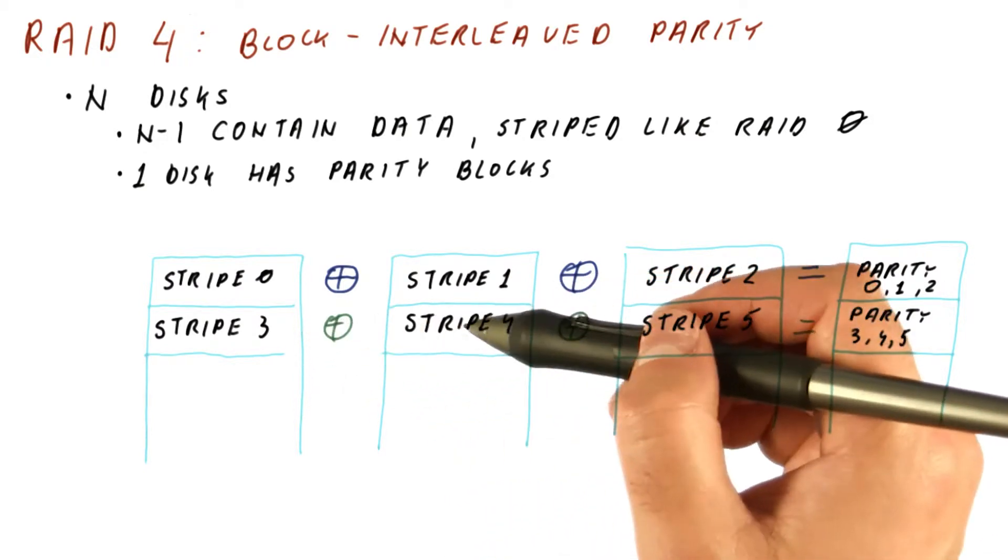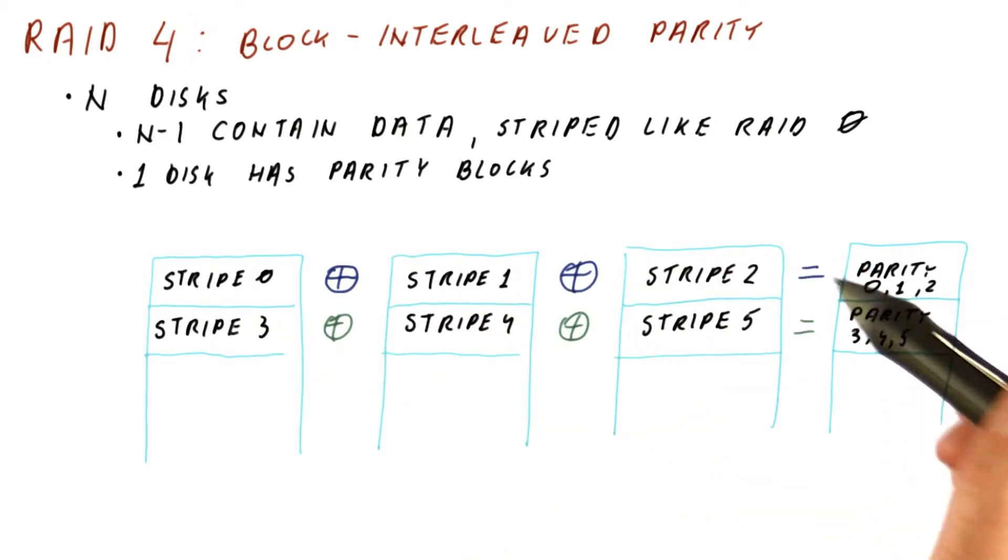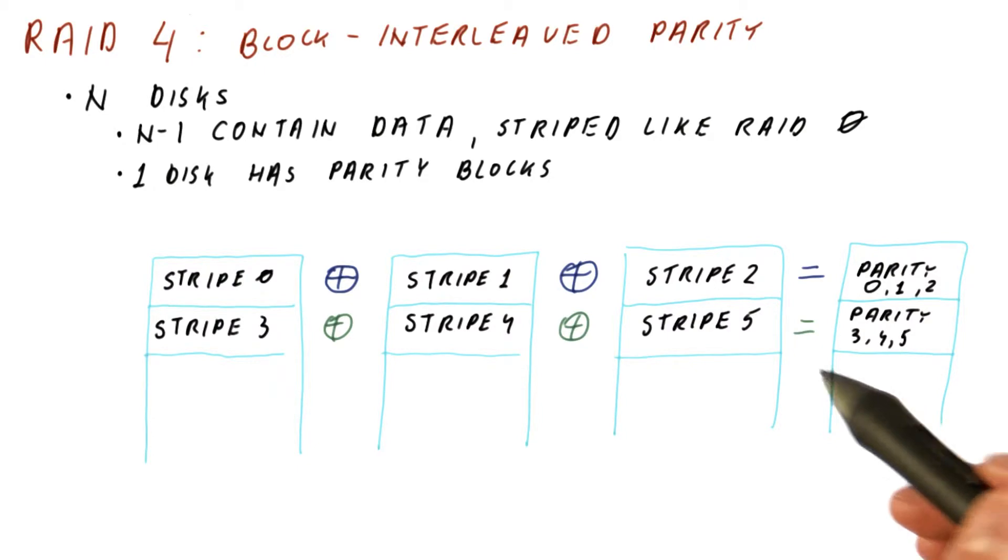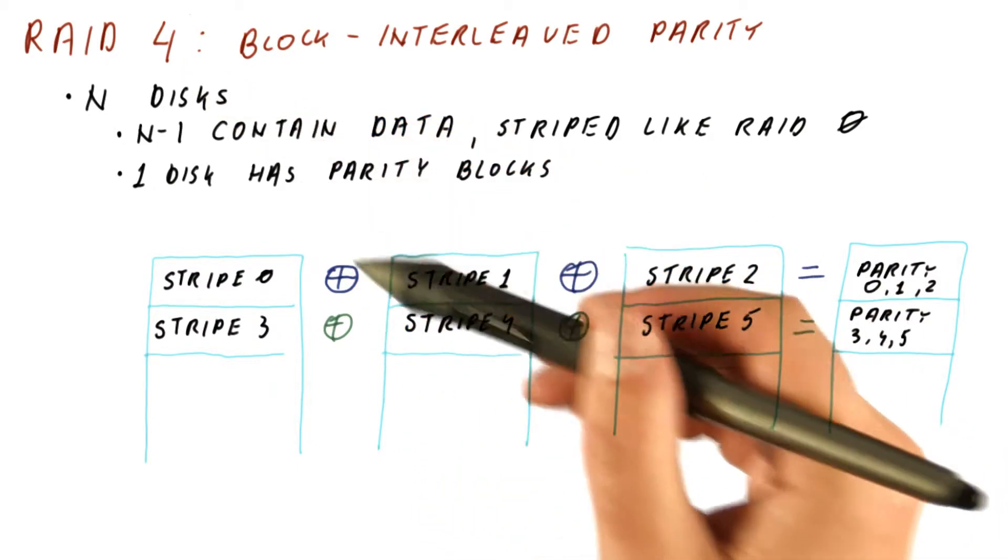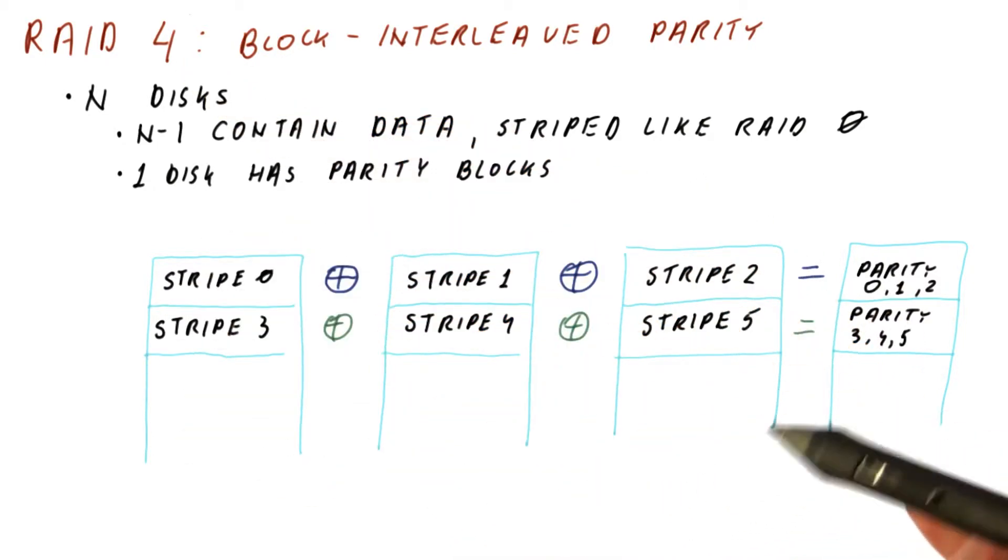You can think of RAID 4 as kind of a more general technique than mirroring. Because in reality, using two disks for RAID 4 is very similar to mirroring.